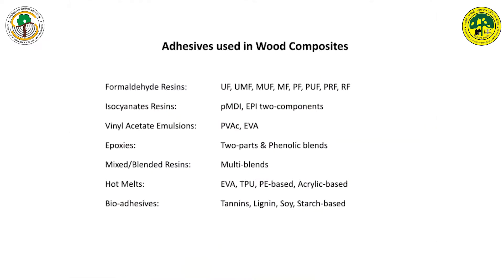Talking about adhesives used in wood composites, formaldehyde resins remain one of the most significant and most widely used resins for obvious reasons: price factors, economy factors, and the expertise which workplaces have gained over the years. Mostly urea formaldehyde, with slight additions of melamine, and urea melamine formaldehyde are the most consumed adhesives in wood composites, followed by PF, melamine formaldehyde, and phenol resorcinol formaldehyde.